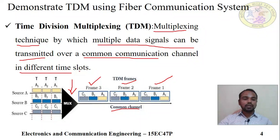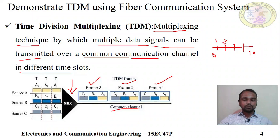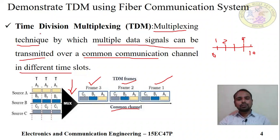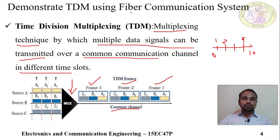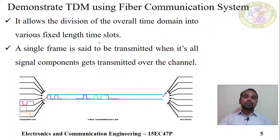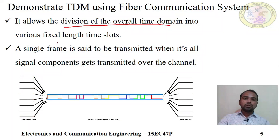I hope you understood what is time division multiplexing. At different time slots, different information is sent. TDM allows the division of the overall time domain into various fixed time slots. By using TDM kit and fiber optic system, this experiment will be conducted. We will thoroughly understand how a TDM system works.